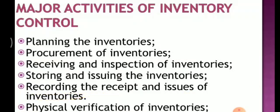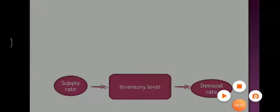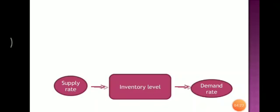And the sixth one is the physical verification. The inventory level is the supply rate and demand rate.